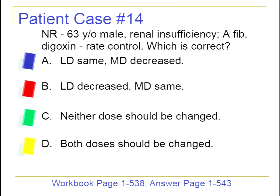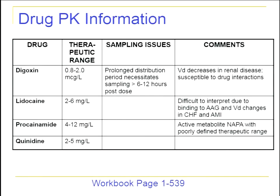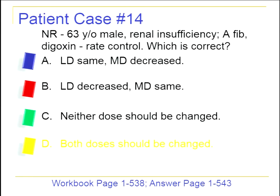Patient case 14: NR is a 63-year-old male with renal insufficiency and AFib, started on digoxin for rate control. The options are: keep loading dose the same but decrease maintenance; decrease loading dose but keep maintenance; change nothing; or change both doses. Uniquely for digoxin, the volume of distribution is decreased in renal dysfunction in addition to reduced renal elimination. Therefore, both the loading dose and the maintenance dose need to be decreased. The correct answer is D: both doses need to be changed.